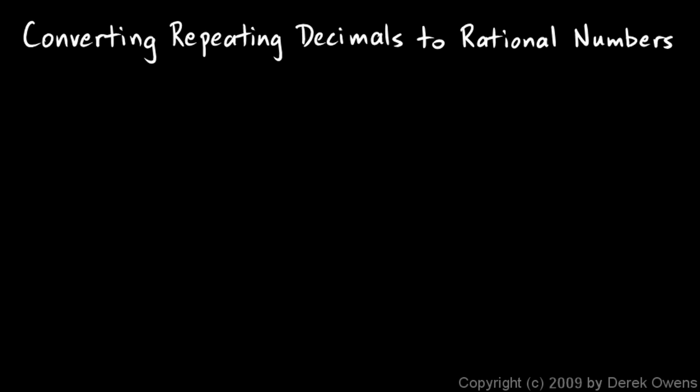Now we'll talk about converting repeating decimals to rational numbers. Basically, that means converting repeating decimals to a fraction. I'll start off with an example. Here's my example. You're told convert 0.3 repeating to a fraction. I'll demonstrate the technique with this example, and then I'll go through some other examples and make some important points.